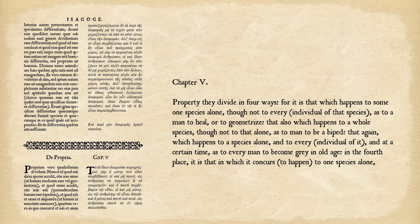The second division is that which happens to a whole species, though not to that alone — as to man to be a biped. This happens to every individual in the species, but not only to individuals in that species. The entire species of man is bipedal, walks on two feet, but man is not the only species which does so.